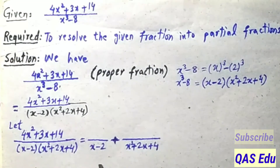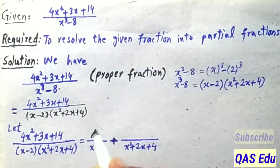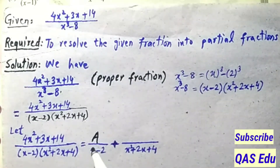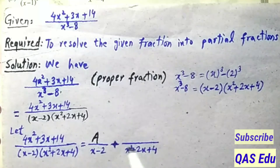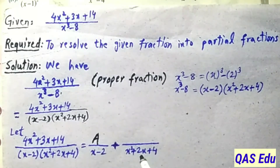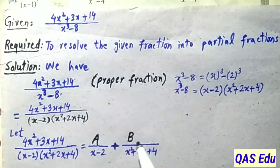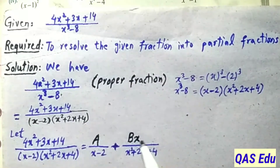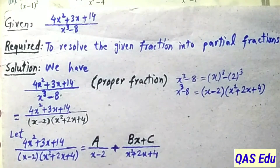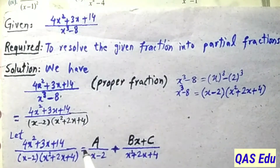For the given fraction, over the linear factor we place constant A in the numerator. Over the quadratic factor we place two constants B and C in the numerator.